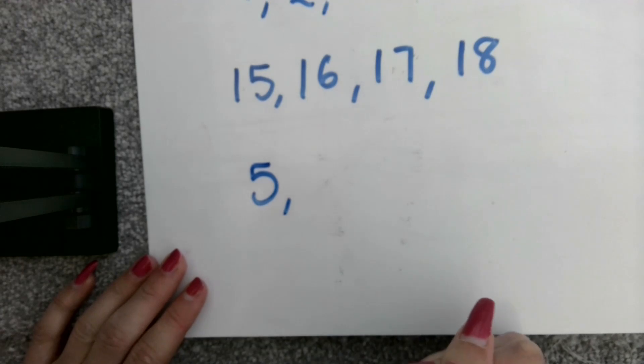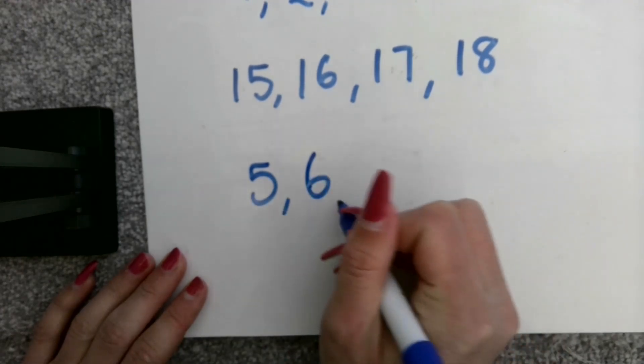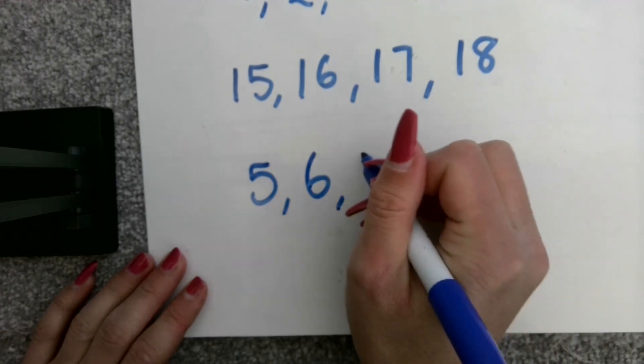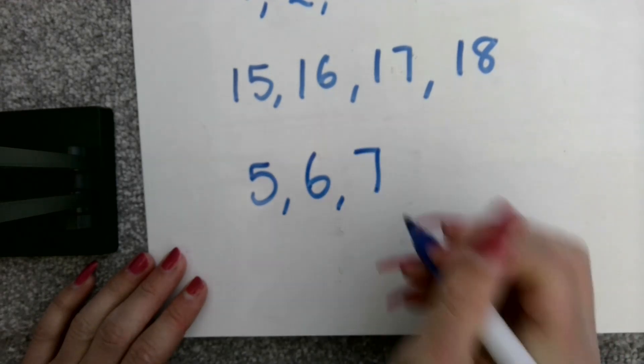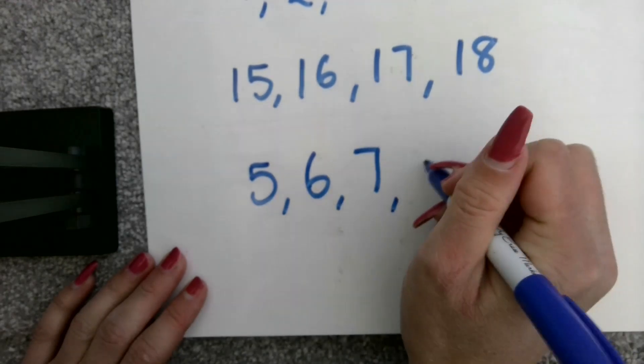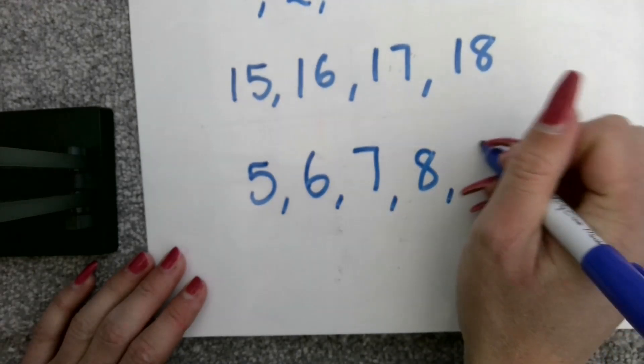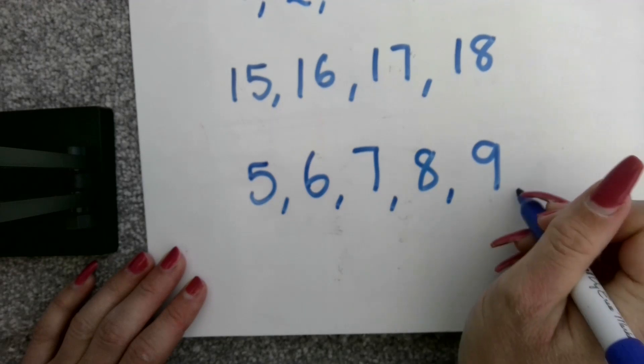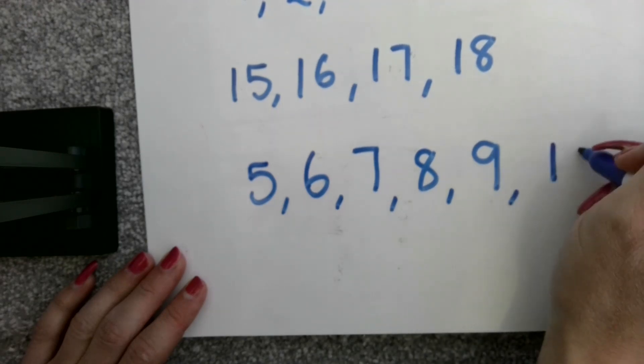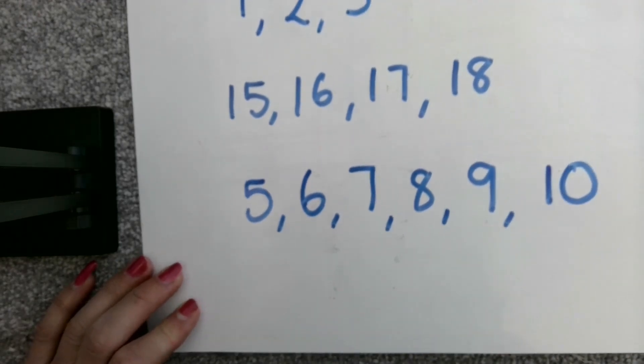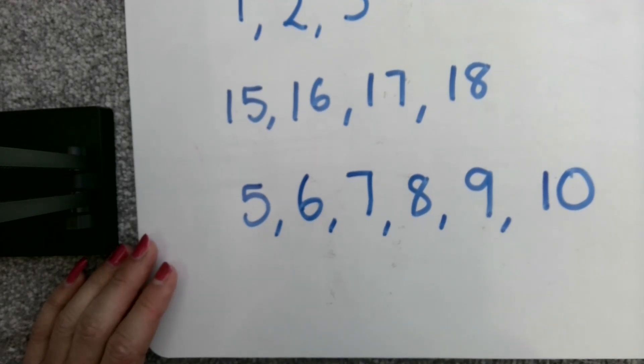Five, what would the next consecutive number be? Six, and then seven, then eight, nine, and finally ten. So, consecutive numbers are just numbers that go up in one each time.